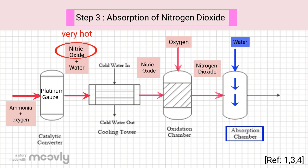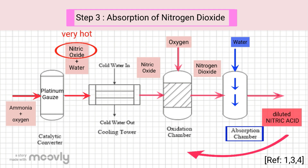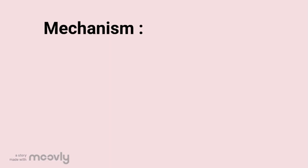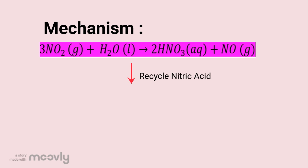Step 3: Absorption of nitrogen dioxide. Nitrogen dioxide from secondary oxidation enters the absorption chamber, where water is showered over it and diluted nitric acid is obtained by absorption. It is then recycled and combined with water and oxygen to produce a higher concentration of nitric acid. The mechanism is as shown.